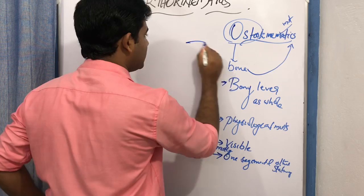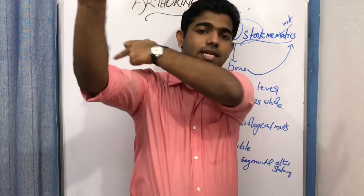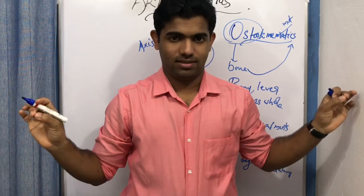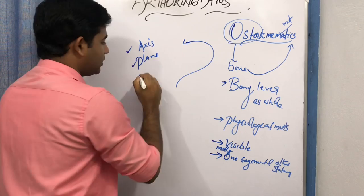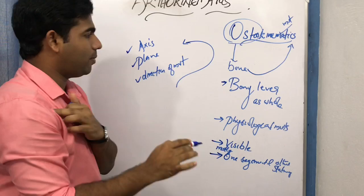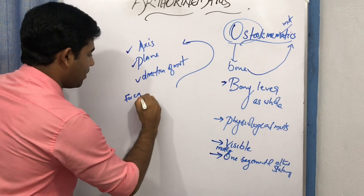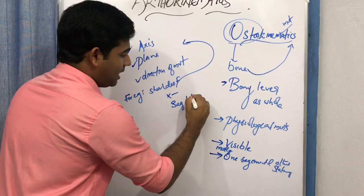Osteokinematic movement can be represented by a few factors: it has an axis of movement, a plane of movement, and a direction of movement. For example, in shoulder flexion the axis of movement is the x-axis, the plane of movement is sagittal, and the direction of movement is flexion.